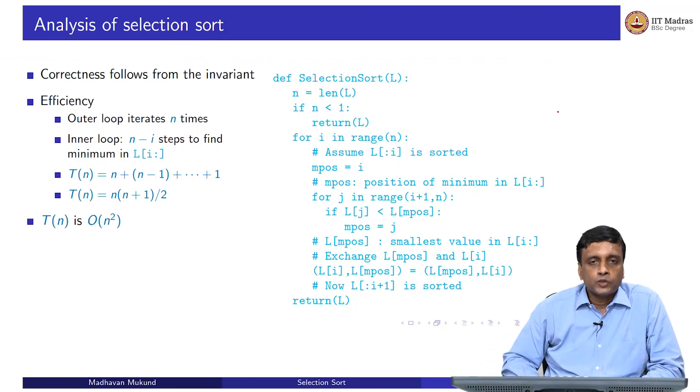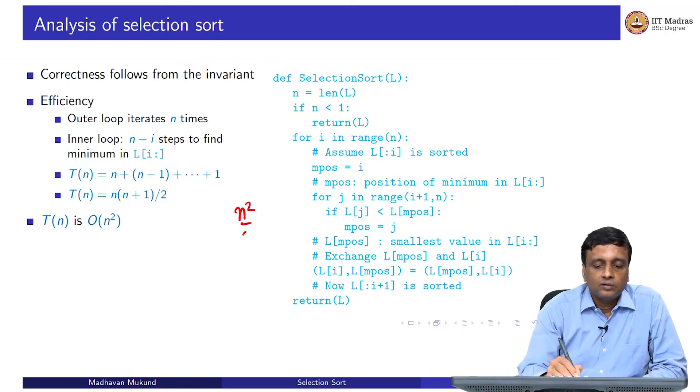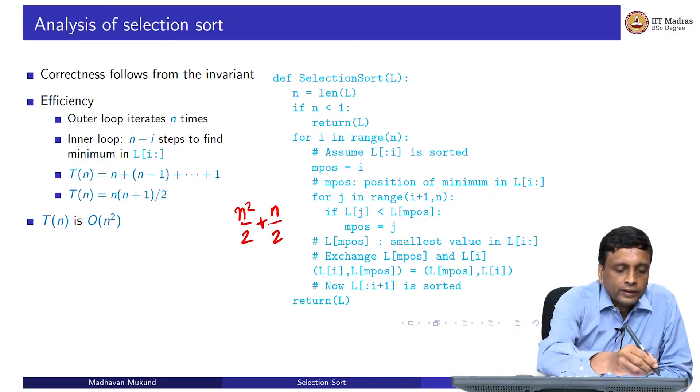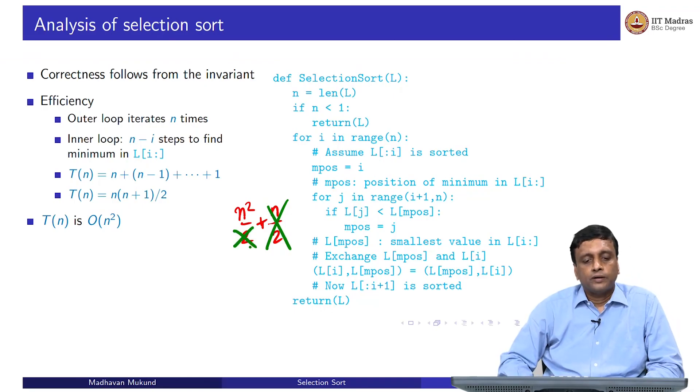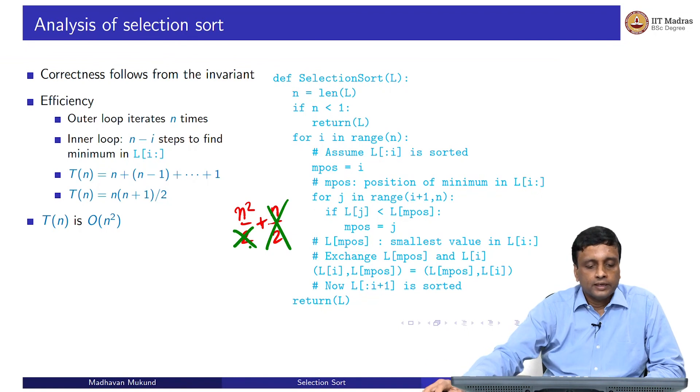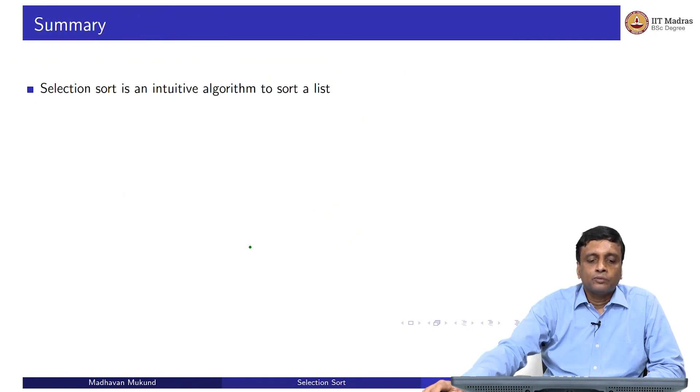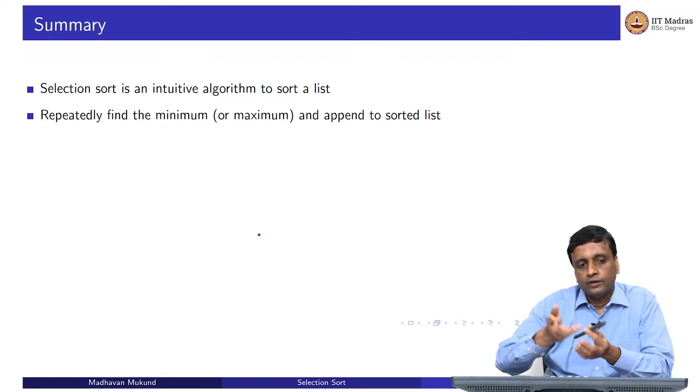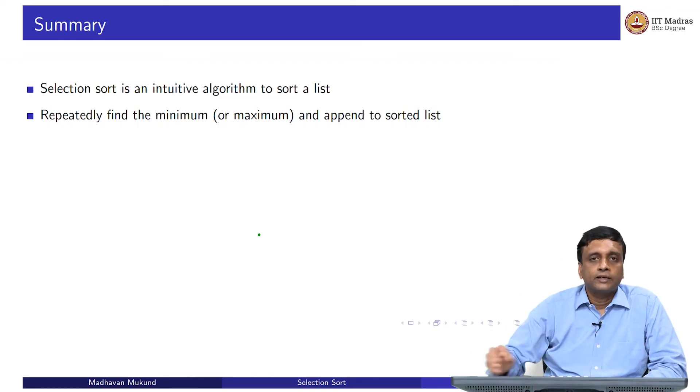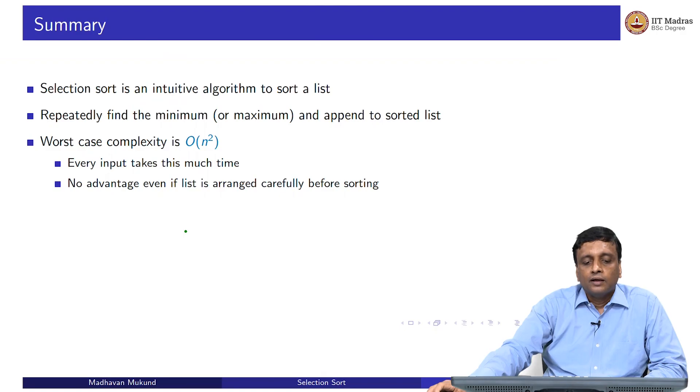As we have seen, this is big O of n square. All we need is the highest term. This is n squared by 2 plus n by 2. Basically, in our asymptotic order of magnitude way of doing things, we throw away this, we throw away this and we say this is order of n square. Selection sort is actually an order n squared algorithm. It is an intuitive algorithm to sort a list, because we do it all the time actually, when we do it with small values. When we are asked to find the minimum, somebody gives you a set of things and asks you to arrange it, this is very often the kind of thing that you might want to do. We just repeatedly find the minimum or the maximum and append it to the sorted list.